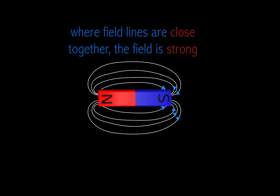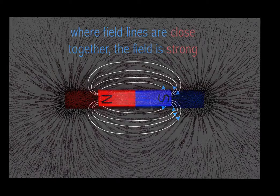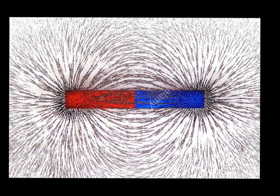Where field lines are close together, the field is strongest. Notice those magnetic field lines, which are symbolized by white lines — they are closer together near the poles, meaning their intensity is greater at that point. They're further apart as you go away from the poles, so it's not as intense.